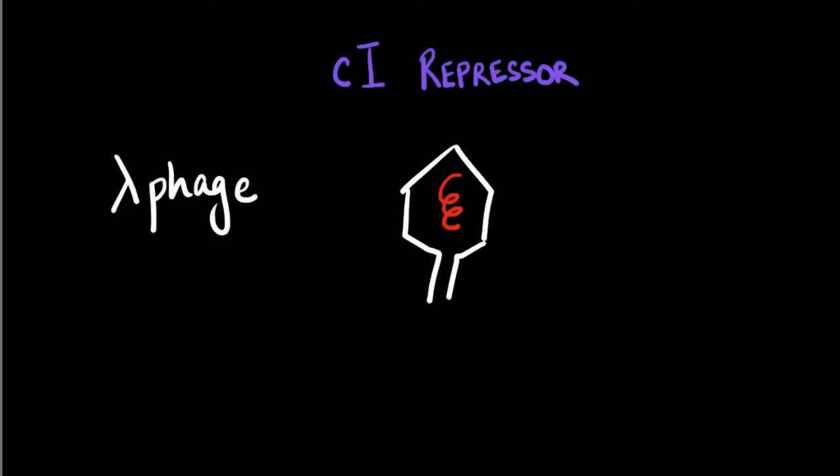There are two replication cycles for a lambda phage: either the lytic replication phase or the lysogenic replication stage. Let's talk about them briefly.